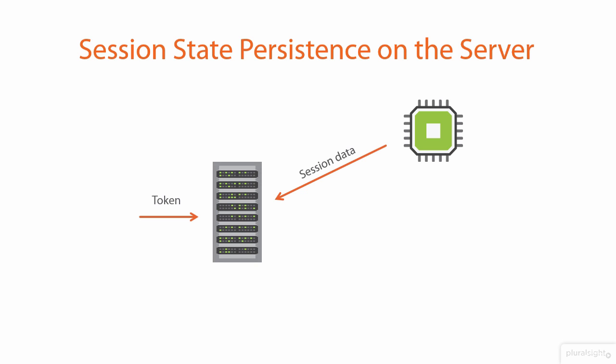Usually - and again there are exceptions - the token will be nothing more than a unique identifier that the server can then map back to data that it is persisting. This leads into the discussion of how the server persists data. One option is it persists it in memory, and very often session state on the server does just exist in memory.